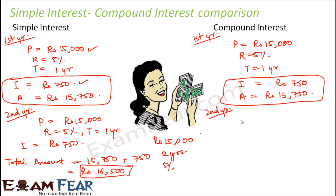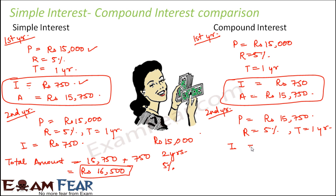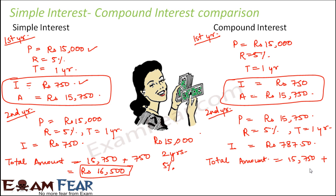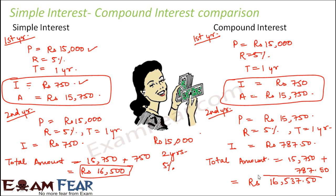Now in compound interest for the second year, the principal amount is no more 15,000 — rather it is 15,750, because in the second year you also get interest on the interest of the previous year. The rate of interest is still five percent and the time period is again one year. Calculating P×R×T÷100 gives interest of rupees 787.50. Adding this to the first year's accumulated amount of 15,750 gives a total amount of rupees 16,537.50.